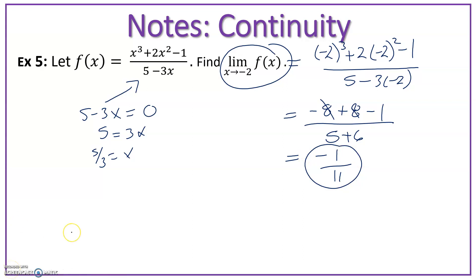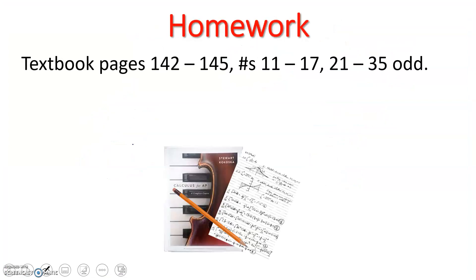So note here, we can make two statements: that f of x is continuous everywhere except for 5 thirds, and that the limit of f of x as x approaches negative 2 is negative 1/11. So now it's your turn to try some. Our practice for today is page 142 through 145, problems 11 through 17, and 21 to 35 odd. Feel free to message me with any specific questions as you work. Thank you.